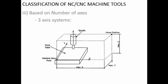The three-axis system allows movement along the X-axis, Y-axis, and vertical movement of the spindle along the Z-axis. The spindle rotation is not counted as an axis of motion. There are three movements: along X-axis (positive and negative), Y-axis (positive and negative), and Z-axis (positive and negative). Examples include a CNC drilling machine or a CNC milling machine.